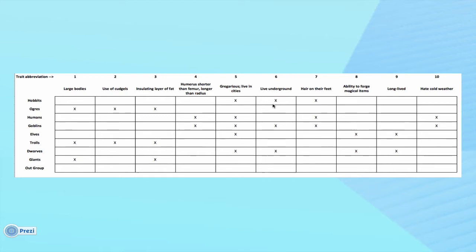If I were to identify one trait that doesn't agree with the other synapomorphies, it would be 'live underground,' which seems to place dwarves, goblins, and hobbits together in a way that doesn't agree with 'hair on their feet' or 'ability to forge magical items.' They seem to share a more recent common ancestor with elves based on other traits, suggesting this is a homoplasy.